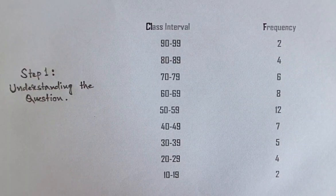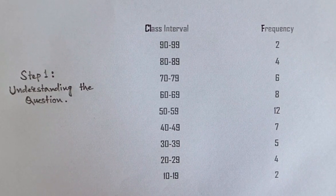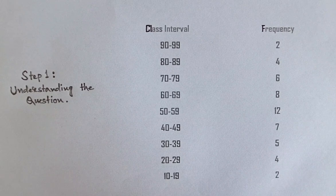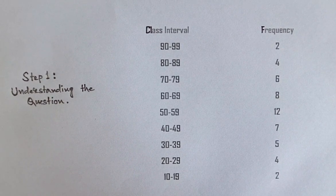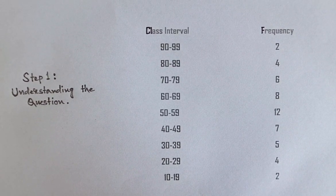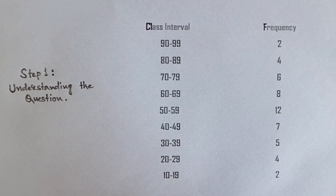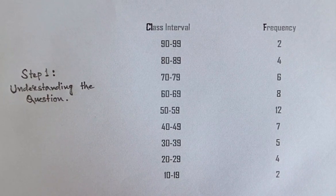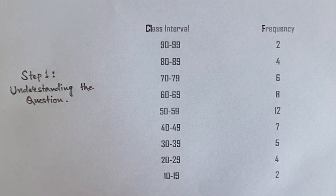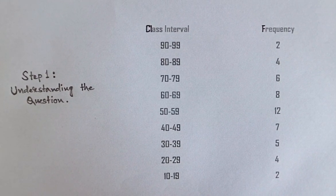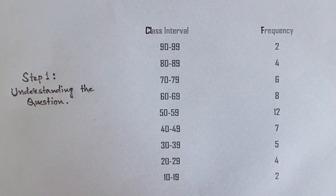Step 1: Understanding the question. First, let's understand the given data. We have class intervals 90 to 99, 80 to 89, 70 to 79, and so on, down to 10 to 19. Corresponding to these intervals, we have frequencies.